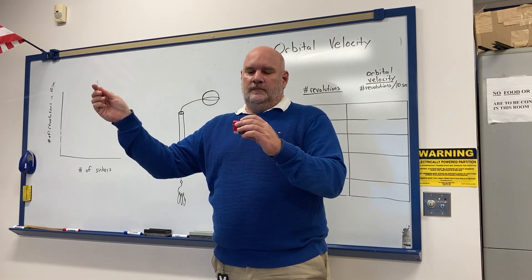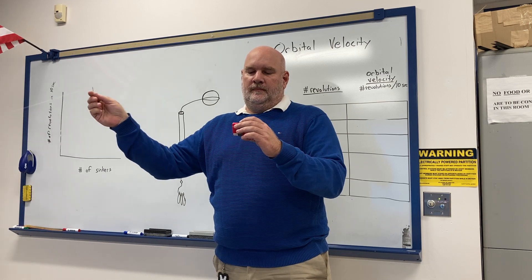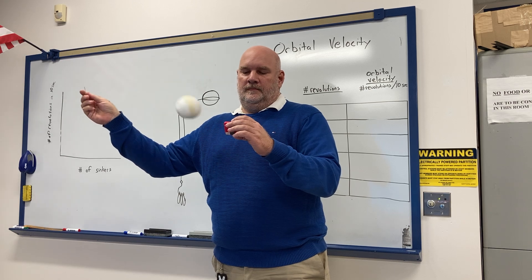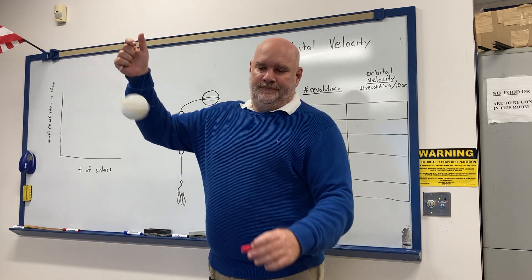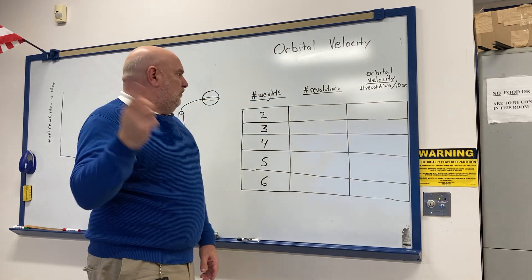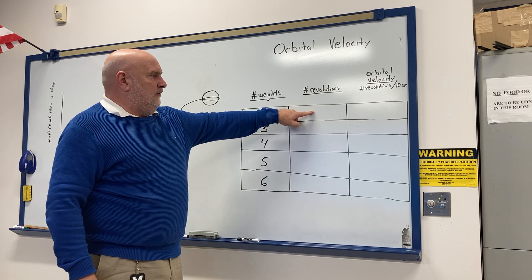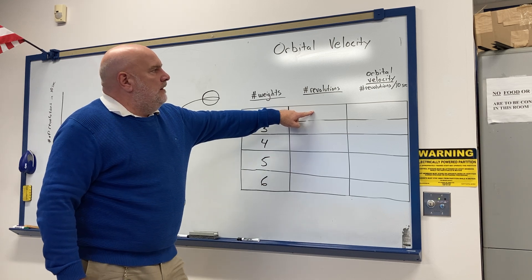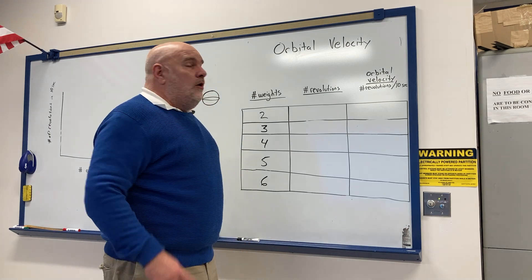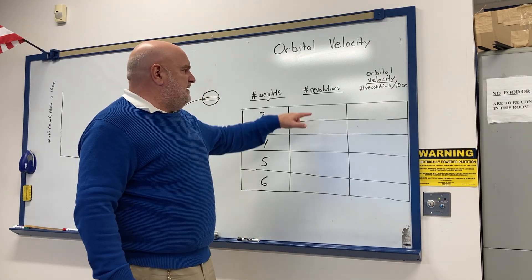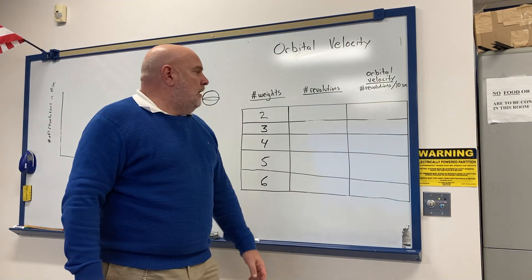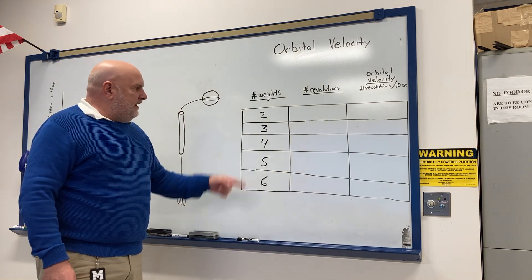However many times the ball went around in 10 seconds, write that number down as the number of revolutions. For the orbital velocity column, since we measured over 10 seconds, just take the number of revolutions and divide by 10 — that gives you the orbital velocity.